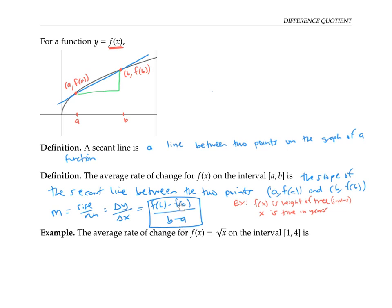So this average rate of change is the amount the tree grows in a certain time period. For example, if it grows 10 inches in two years, that would be 10 inches per two years, or five inches per year would be its average rate of change — its average rate of growth.